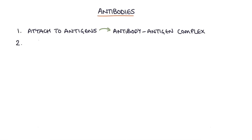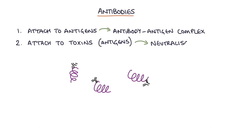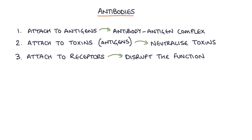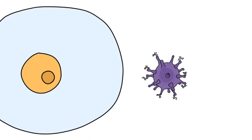Secondly, antibodies can attach themselves to the toxins produced by pathogens, which themselves are antigens, and they neutralize the effects of these toxins. Thirdly, antibodies can attach themselves to the receptors on pathogens and disrupt the function of that receptor. For example, it could stop viruses from being able to recognize the cells they want to invade and therefore prevent viral invasion.